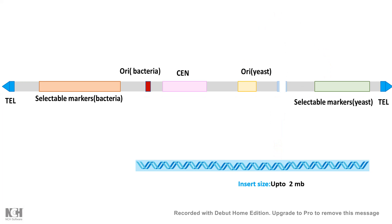After restriction digestion at the multiple cloning site, we can insert our gene of interest or the DNA fragment of interest, which could range from several kilobases to several megabases. That is the biggest advantage of using Yeast Artificial Chromosome — it has a huge carrying capacity and yet it is quite stable.